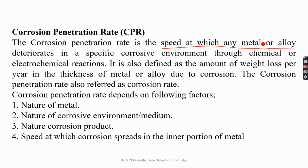Corrosion usually takes place either by chemical attack or by electrochemical attack. The speed or rate of reaction is expressed in terms of corrosion penetration rate. It is also defined as the weight loss per year in the thickness of the metal or alloy due to corrosion — simply the weight loss method.